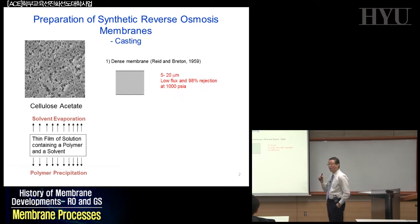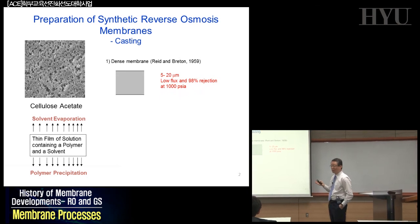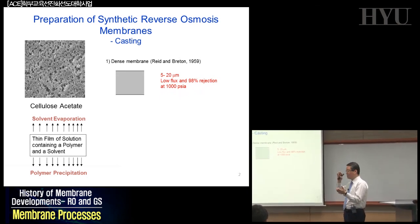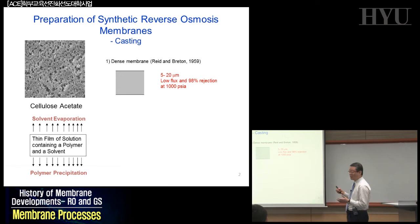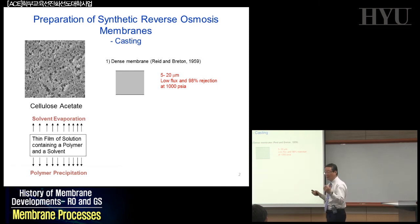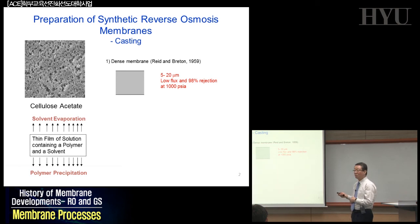They made a cellulose acetate thin film about 5 to 20 micrometers thick. They pushed seawater containing about 3.58% sodium chloride — or 35,000 ppm — at about 80–90 bar, which is about 1,000 psi, and obtained only water, rejecting about 98% of the sodium chloride. It was a very successful program. However, flux was very low, which was the issue. Economically, it was not possible to make this membrane viable because the flux was too low.